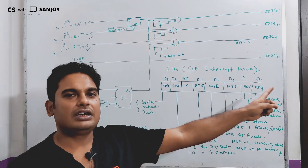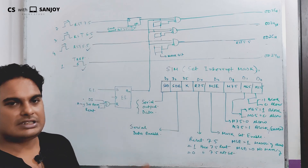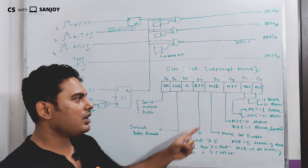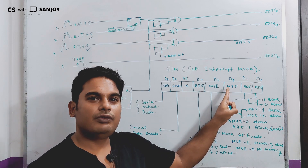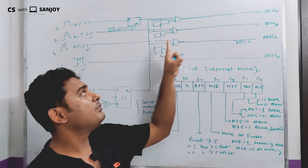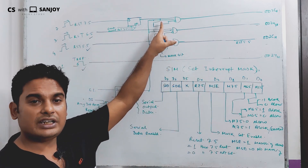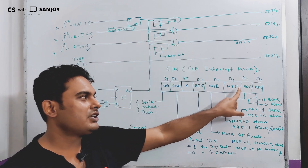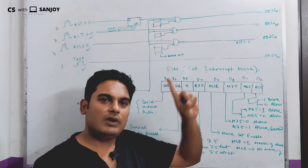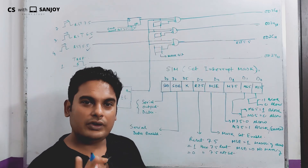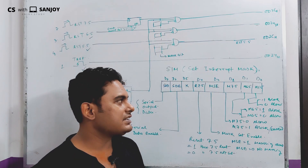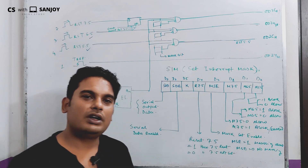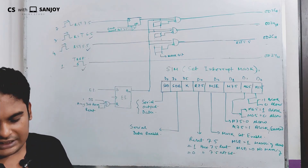If M7.5 is set to 1, then RST 7.5 will be masked and blocked. If it is 0, it will be allowed. If M6.5 is 1, it will be blocked and not allowed. If M6.5 is 0, it will be allowed.